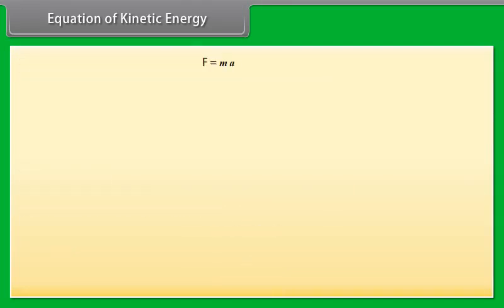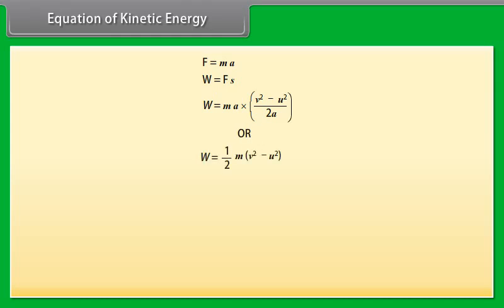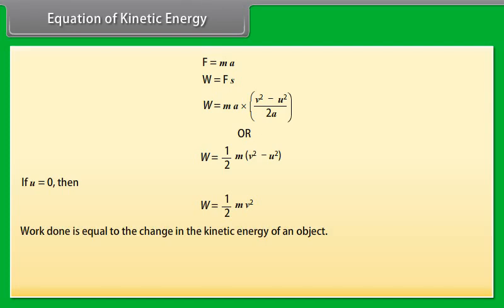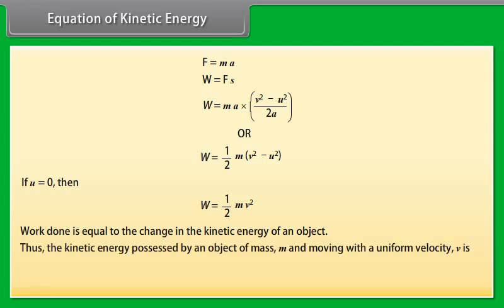We know that f = ma. So by using values of f and s in the equation of work, we get W = ma × (v² - u²) / 2a, or W = ½m(v² - u²). If the object starts from a stationary position, that is u = 0, then the work done W = ½mv². It is clear that the work done is equal to the change in kinetic energy of an object. Thus, the kinetic energy possessed by an object of mass m moving with a uniform velocity v is ½mv².